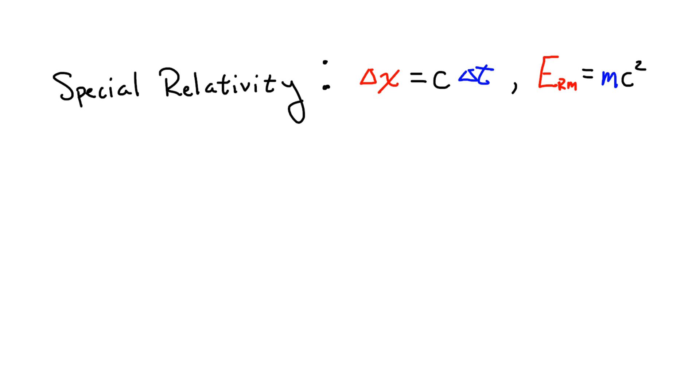In every particle's rest frame, its energy is equal to its mass times a conversion factor, c squared.